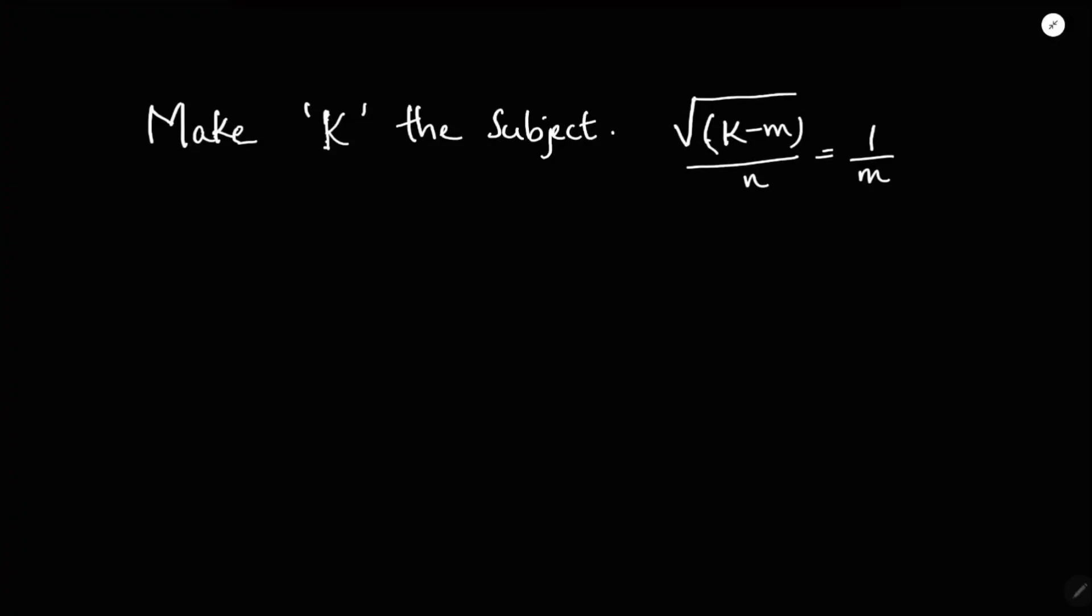Make k the subject. Under root k minus m by n equals 1 by m. So here, under root k minus m upon n equals 1 by m.